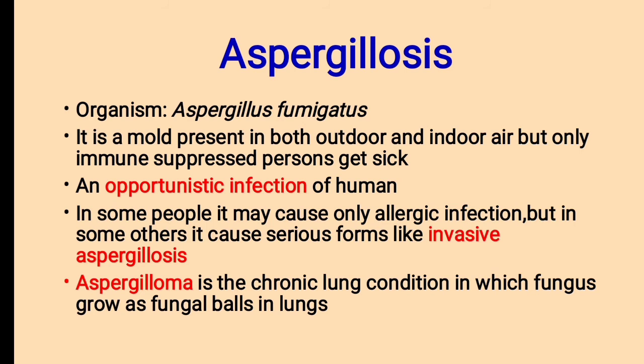5. Aspergillosis. Organism: Aspergillus fumigatus. It is a mold present in both outdoor and indoor environments, but only immunosuppressed persons get sick due to Aspergillosis. Aspergillosis is an opportunistic infection — opportunistic means infection occurs during opportunities like a weakened immune system. In some people it may cause only allergic infection, but in others it causes serious forms like Invasive Aspergillosis, where the fungus affects the lungs. It is a chronic condition in which the fungus grows as fungal balls in the lungs.